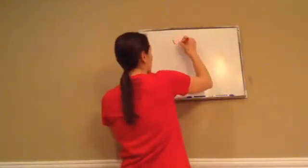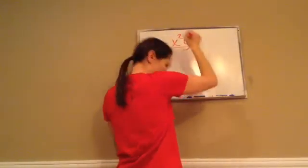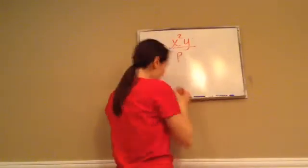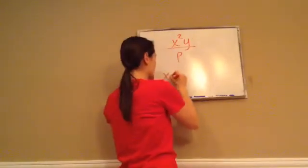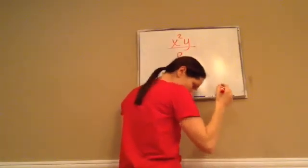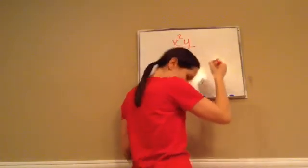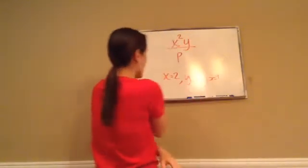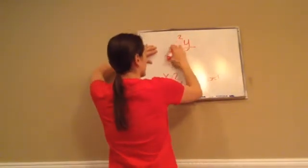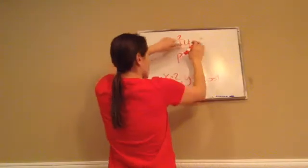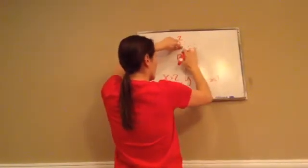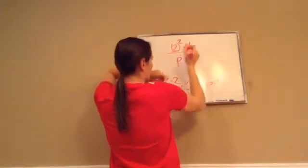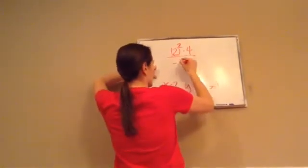All that to say, if you have a problem like this — most of the time they're going to tell you x is 2, y is 4, and p is negative 1. If that was the case, let's go and just put all of these back in here. Y is a 4, so this is 2 times 4, and then this p is negative 1.